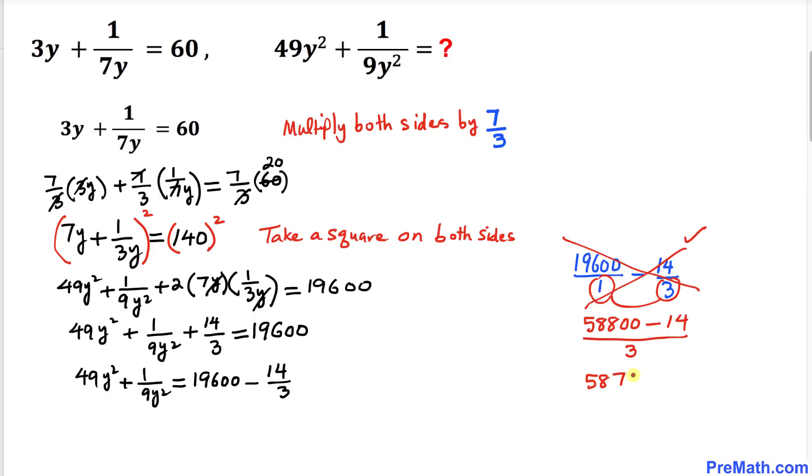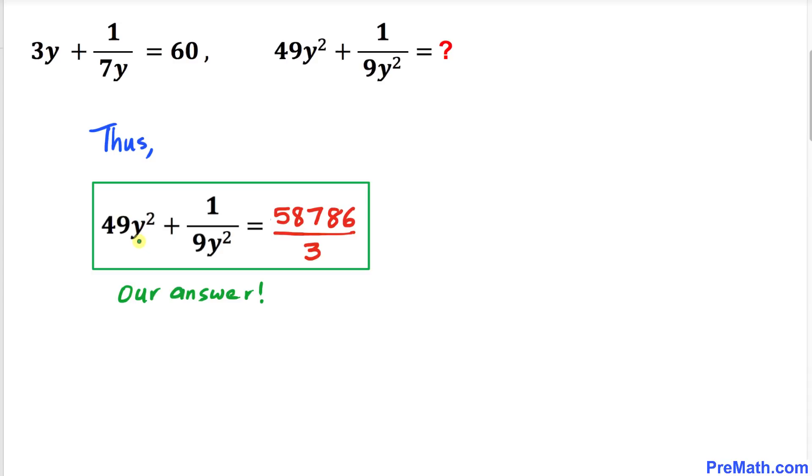Thus, 49y² plus 1/9y² equals 58,786 divided by 3. That is our answer.